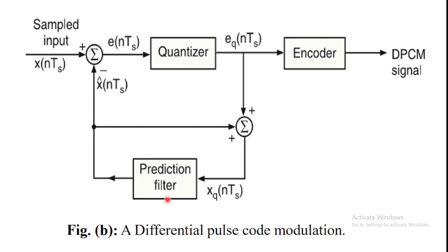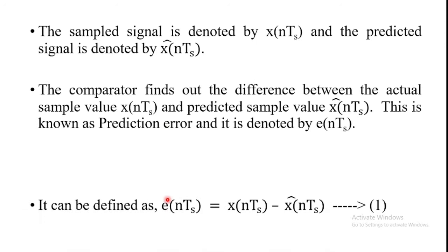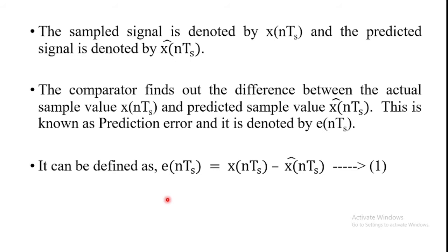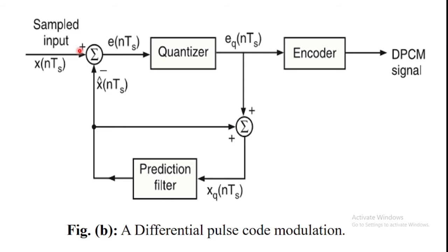Using this principle, X(nTs) is the sampled signal and X̂(nTs) is the predicted signal or output of the prediction filter. The error signal, or prediction error, is the difference between the sampled input signal X(nTs) and the predicted signal X̂(nTs). Therefore, the error signal is defined as E(nTs) = X(nTs) − X̂(nTs). In the summing circuit, the plus and minus operations give the output as the difference between the input sample signal and predicted signal, where Ts is the sampling interval.